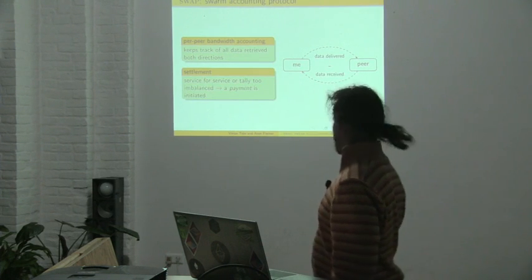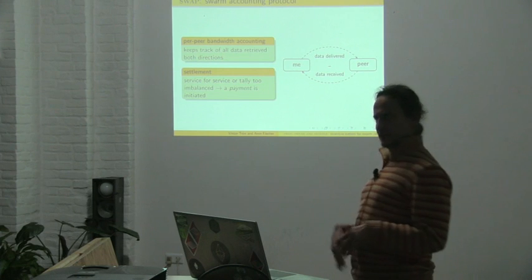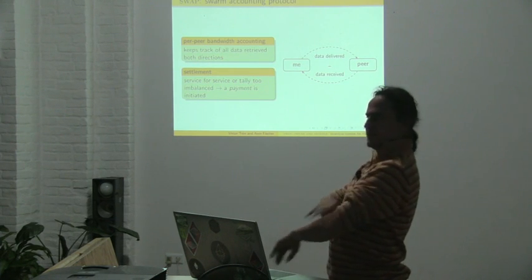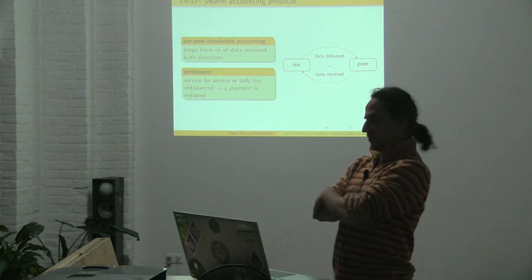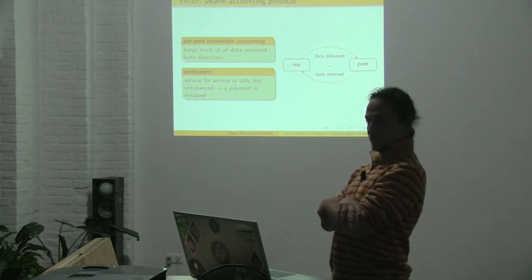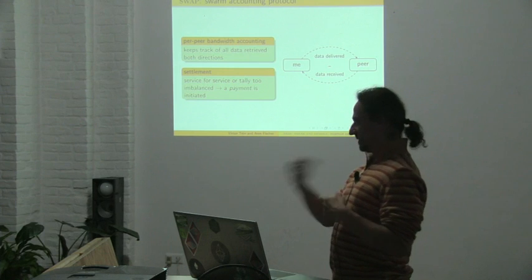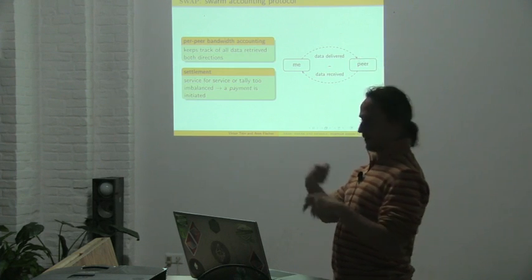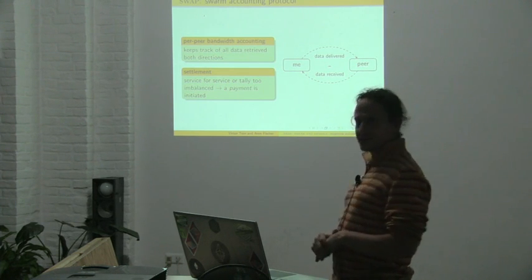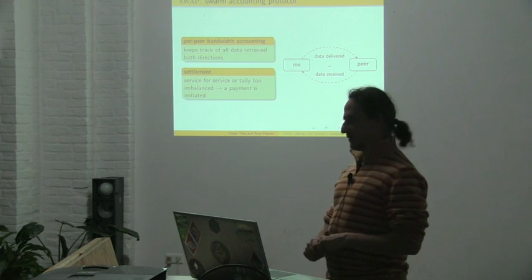The SWAP protocol is the part that does the bandwidth accounting — that's the easier part. It's based on the idea that you have peer-to-peer accounting of how much traffic goes to your peers. You basically count the give and take. You keep a scorecard with your peers and settle outstanding balances.